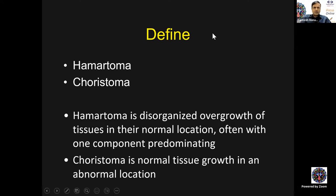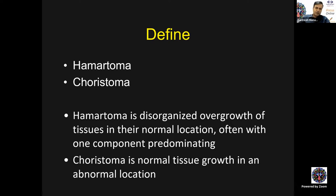Hamartoma is disorganized overgrowth of tissues in their normal location, often with one component predominating — epithelial, stromal, cartilage, osseous, or vascular. Choristoma, on the other hand, is normal tissue growth in an abnormal location. The tissue is normal for any other part of the body, but for the location it is in, it is abnormal.